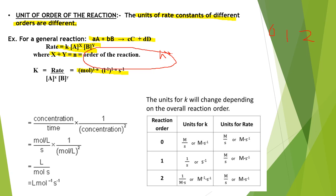If the order of the reaction is zero (N equals 0), the unit becomes: mol to the power 1, liter inverse to the power 1, second inverse — giving mol per liter per second. If the order is 1 (N equals 1), mol to the power zero and liter to the power zero both equal 1, so the unit is simply second inverse.